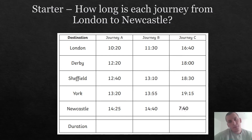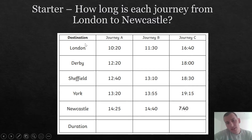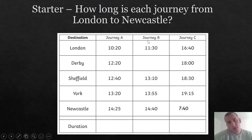Our starter today is this: How long is each journey from London to Newcastle? Here we have a timetable — let's say it's a train timetable — and it tells you the route from London to Newcastle. There are three journeys every day. I want you to tell me how long it takes to get from London to Newcastle in each journey: journey A, journey B, and journey C. Please pause the video, complete this task, and then press play — I'm going to go through this in some detail.